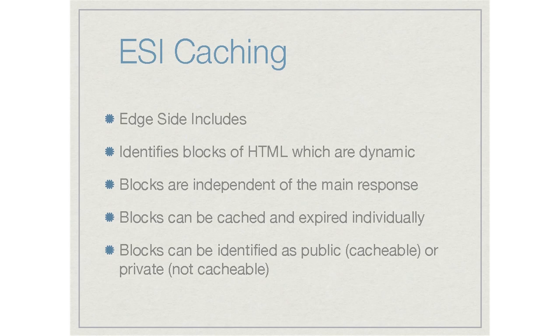ESI stands for Edge Side Includes. It's a custom protocol written by Akamai in the late nineties that identifies blocks on the page which are dynamic and can exist separately from the actual page they're displayed on. When you implement ESI caching, blocks are independent of the main response — you can make a request just for a small element of the page. These responses can be cached and expired individually, giving you great flexibility over how dynamic your overall page is. Blocks can be identified as public (cached and available to all users) or private (containing user-specific data that shouldn't be cached).